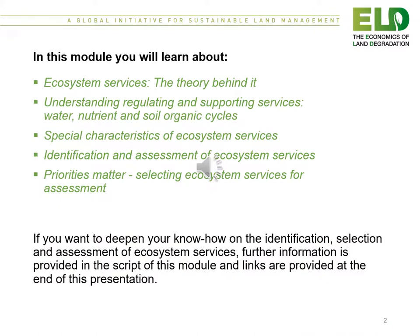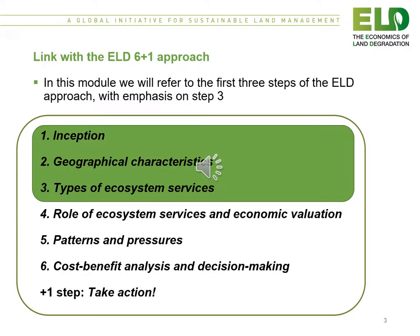In this module you will learn about ecosystem services and the theories behind them, understanding regulating and supporting services including water, nutrient and soil organic cycles, the spatial characterization of ecosystem services, and the identification and assessment of those ecosystem services. We will end with discussing that priorities matter and which ecosystem services should be selected for assessment. This module covers the first three steps of the ELD 6 plus 1 approach, with a particular emphasis on step 3: the types of ecosystem services.